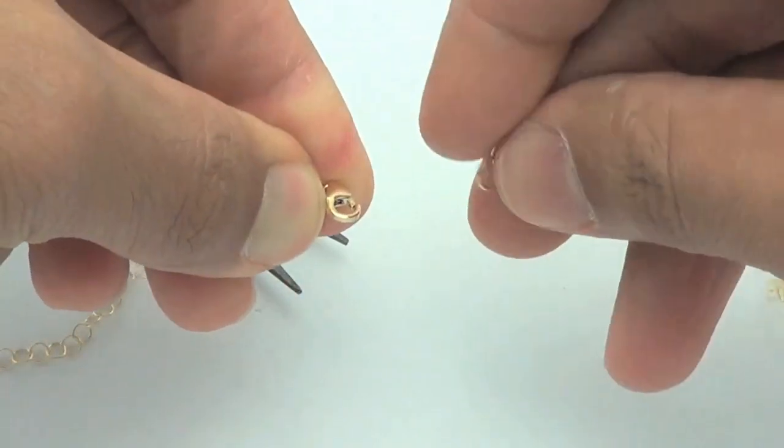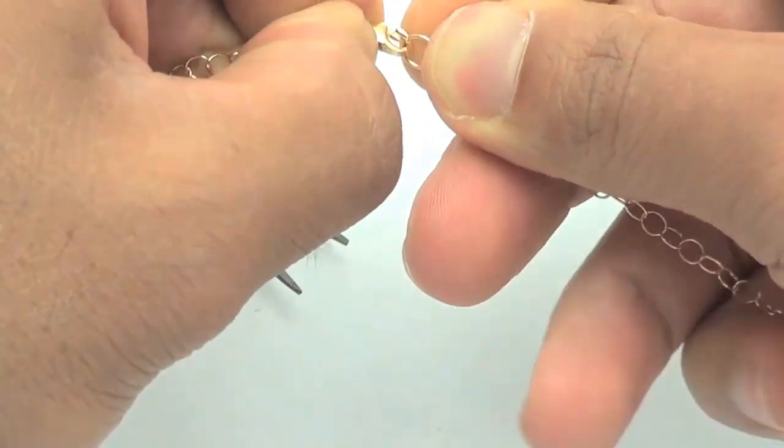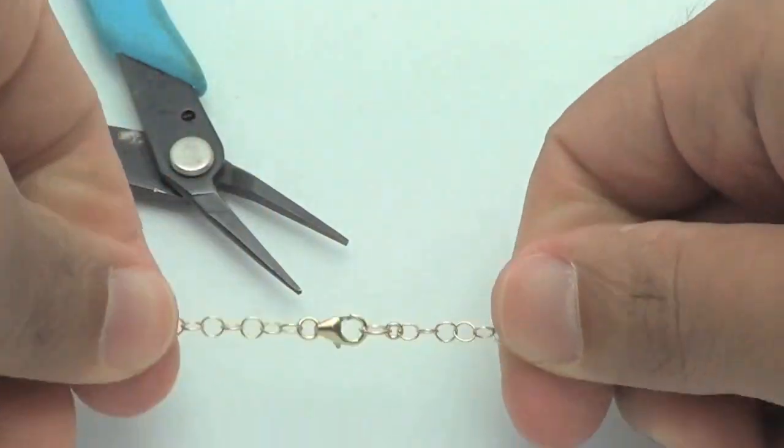So now we have both ends and that's it. Your chain's ready to go. It's a brand new lobster clasp. No soldering necessary.